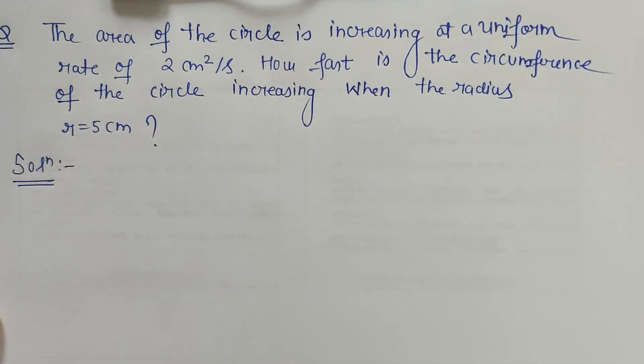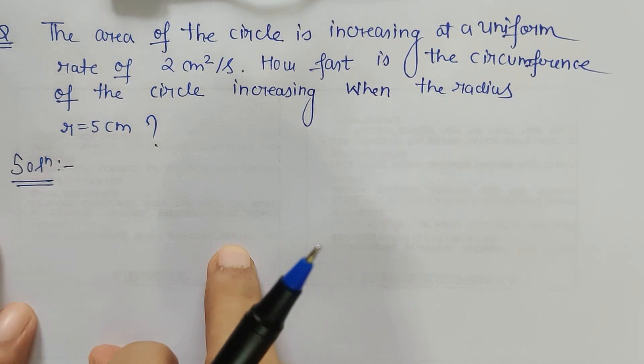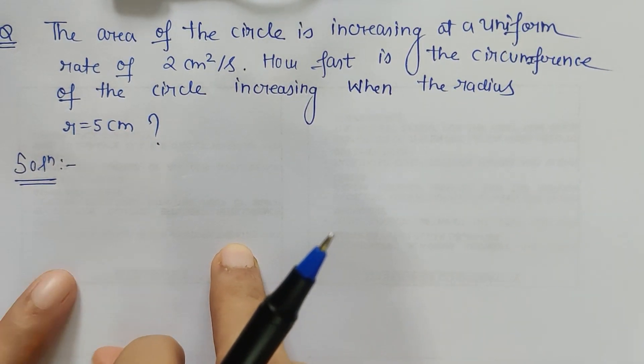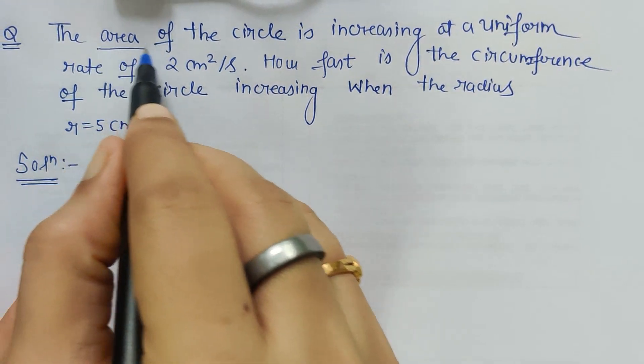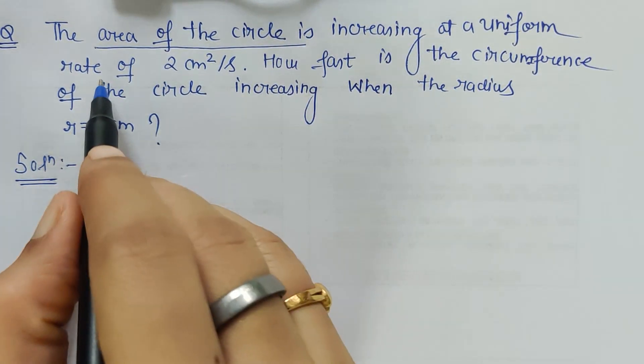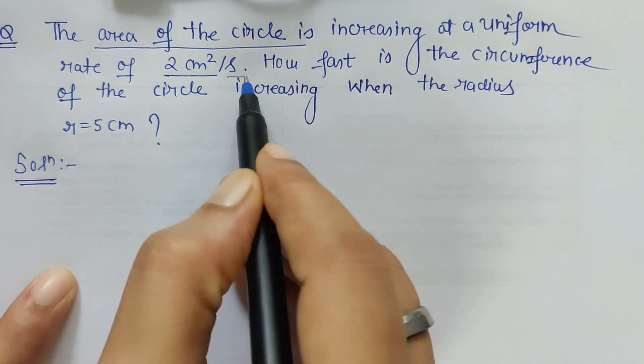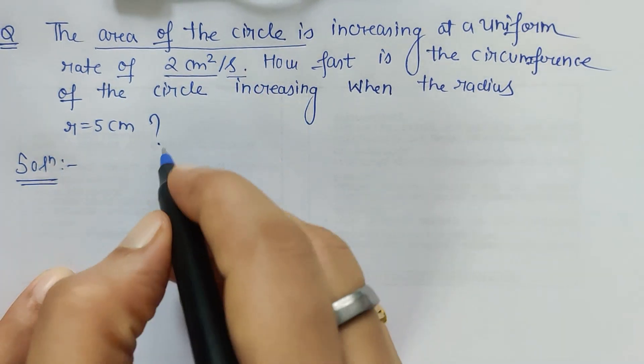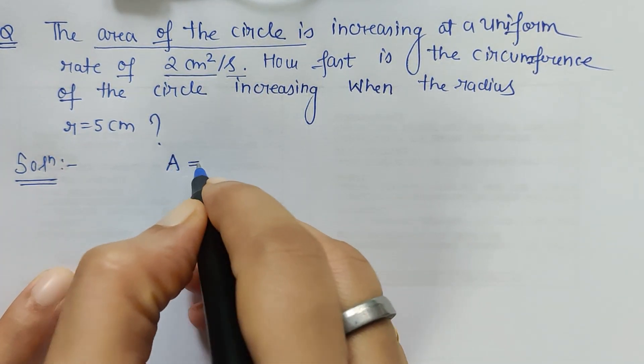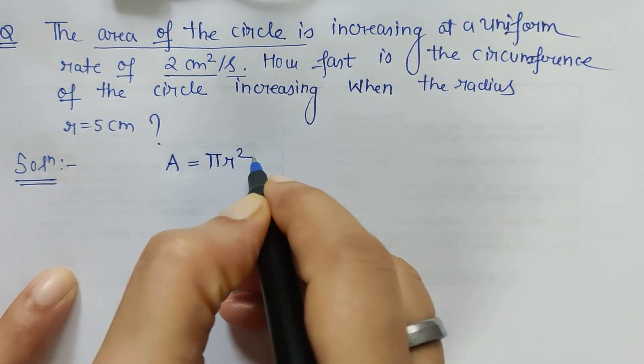Hello friends, here again I am with one application problem of derivatives. The area of this circle is increasing at a uniform rate of 2 centimeters square per second, so that means the area of circle formula is involved here, and area of circle is A = πr².